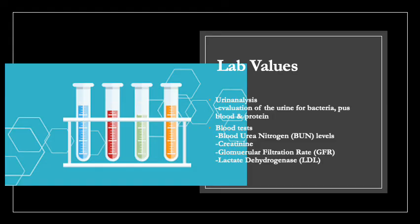Now let's look at some lab values for the kidneys. Before scanning any patient you should be looking at lab values and previous imaging. If you can access the patient's lab values at your place of practice, you really should, as they can change how you interpret findings on ultrasound. For example, if a patient has blood in their urine, you would want an optimally distended bladder to evaluate its contours for pathology such as stones, sludge, or a subtle mass.